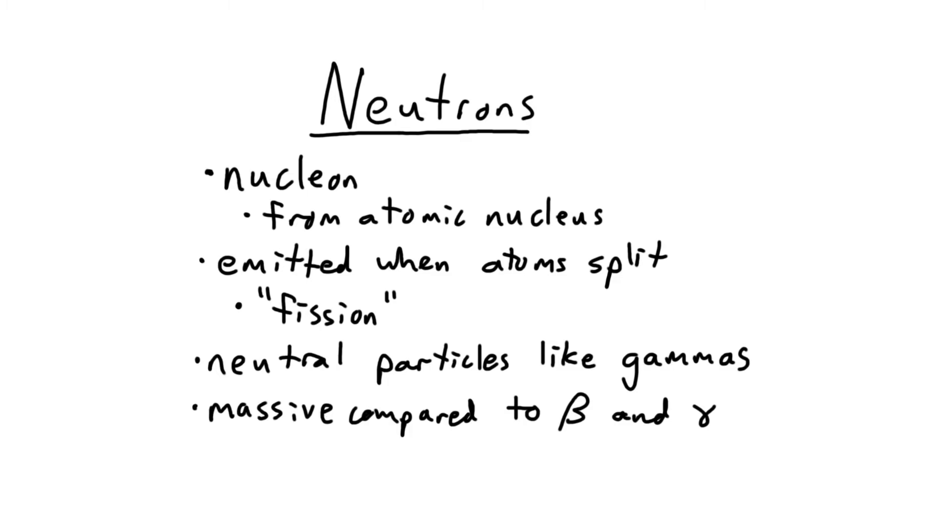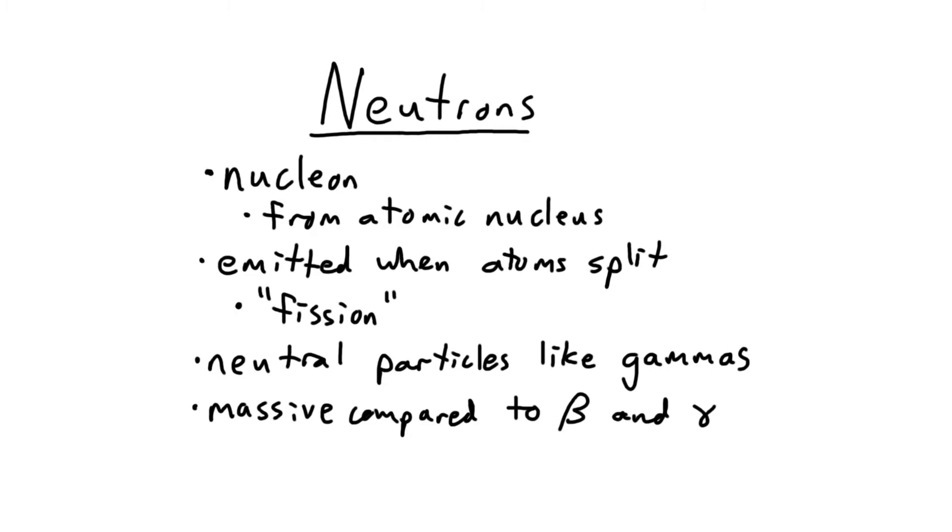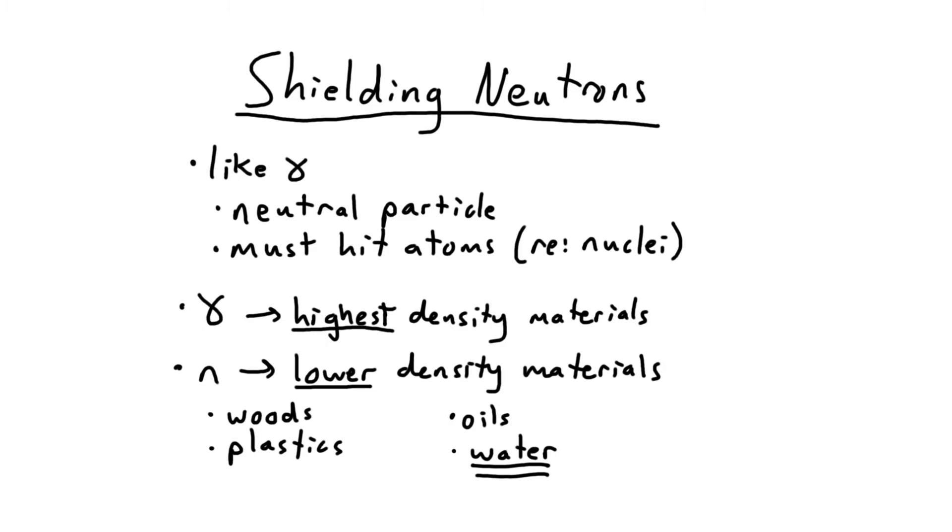Like gamma rays, neutrons are neutral, which makes them very penetrating. They also weigh a lot, compared to betas and gammas. Shielding neutrons is like shielding gamma rays in that they're both neutral, and both must directly hit a lot of atoms to lose energy and be shielded. With gamma rays, the densest materials, like uranium and tungsten, are the best shields. However, with neutrons, the opposite is true.